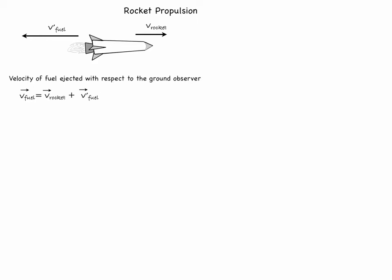Now the motion is along a straight line and so we can write this expression in algebraic form. For that we will choose a positive x-axis along the direction of the rocket moving. And so we can write for the velocity of the fuel that is equal to the magnitude of the velocity of the rocket minus the relative speed with which the fuel is being ejected.